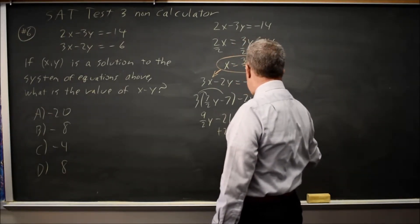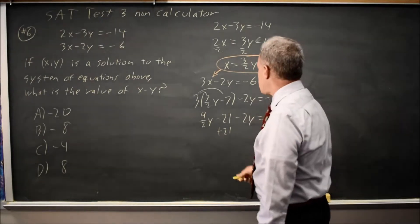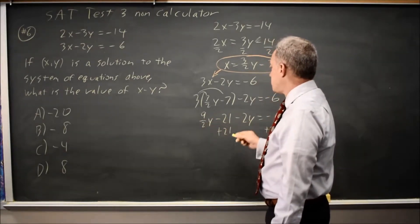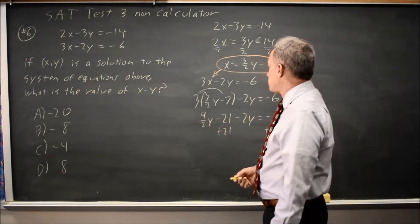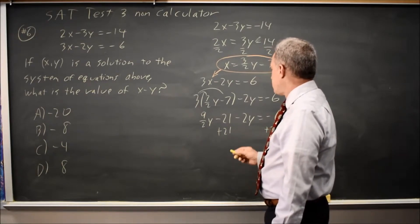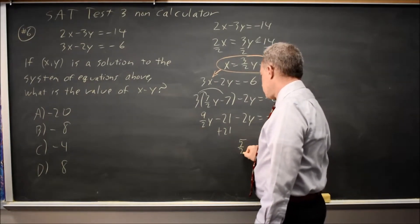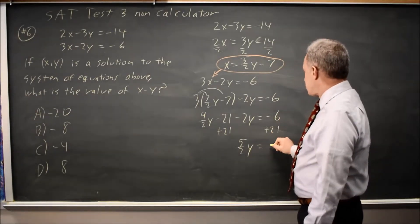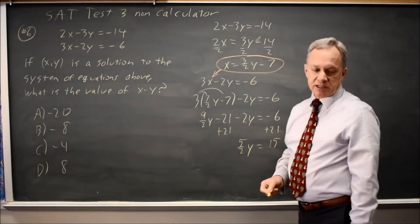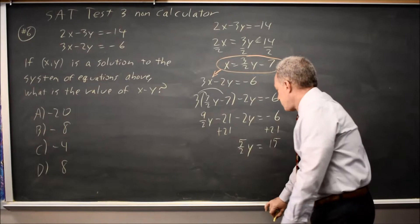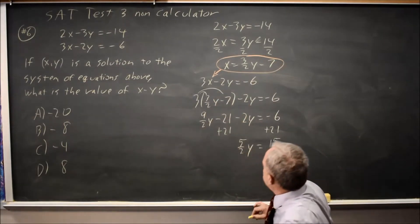Add 21 to both sides. And I get 9 halves y minus 2y. So that's 9 halves minus 4 halves is 5 halves y. 21 minus 6 is 15. I find it easier to phrase that way than, say, negative 6 plus 21. Let's multiply by 2.